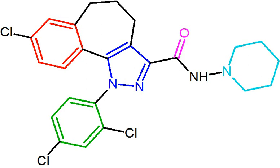Cannabinoid receptor-related processes are involved in cognition, memory, anxiety, control of appetite, emesis, motor behavior, sensory, autonomic and neuroendocrine responses, immune responses and inflammatory effects. There are two well-characterized endocannabinoids located in the brain and periphery: the first identified was anandamide, arachidonoyl ethanolamide, and the second was 2-AG. Additional endocannabinoids include virodhamine, O-arachidonoyl ethanolamide, noladin ether, 2-arachidonoyl glycerol ether, and NADA, N-arachidonoyl dopamine.